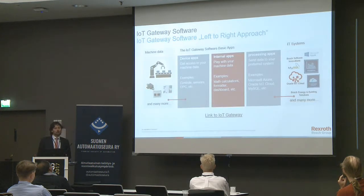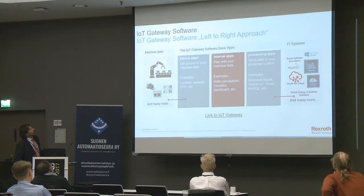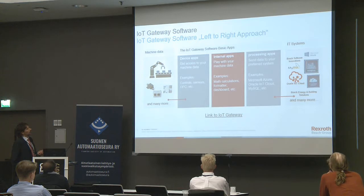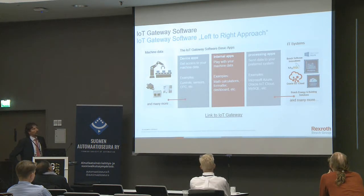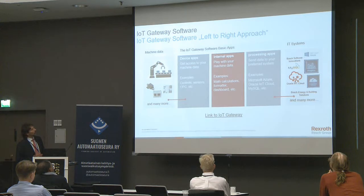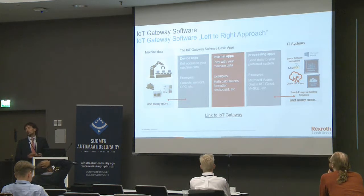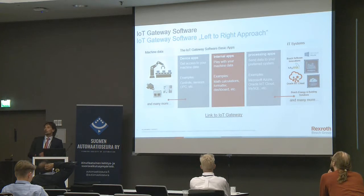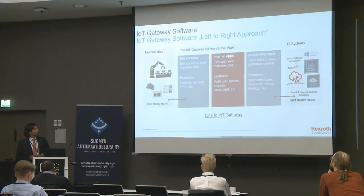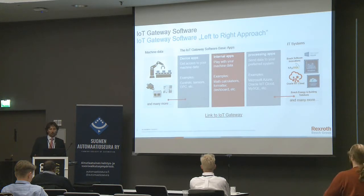Looking deeper at the IoT software, we see three different sections of apps. The first are the device apps, where you get access to your machine data, such as configuring your sensors. The second are the internal apps, where you can work with your machine data — for example, doing mathematical calculations or displaying dashboards. The third are the processing apps, where you can send the data to your preferred IT systems. We provide many of these apps out of the box, but with the available software development kit, you can also create your own apps to build a cutting-edge advantage for your company.